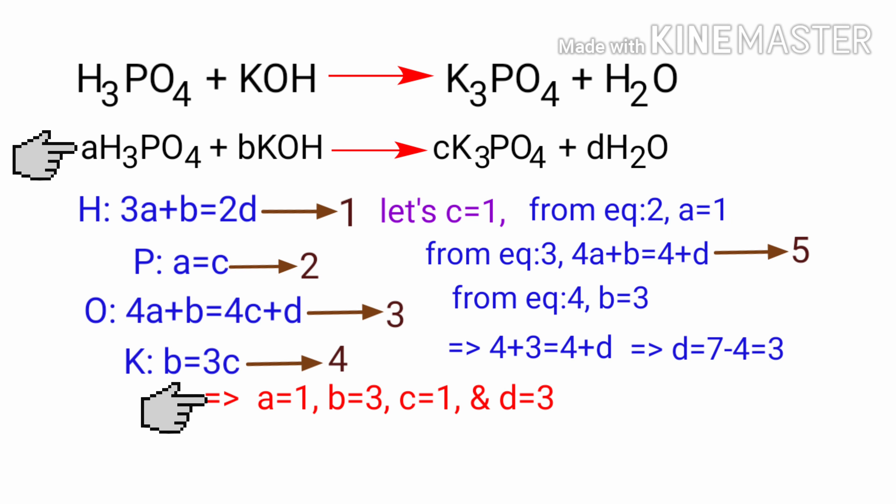Now you can apply the a, b, c, d values in the above equation. So H3PO4 plus 3KOH gives us K3PO4 plus 3H2O. The equation is now balanced.